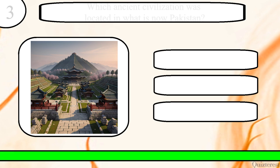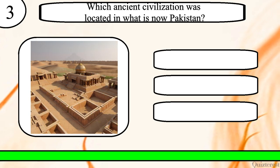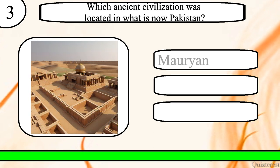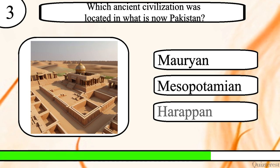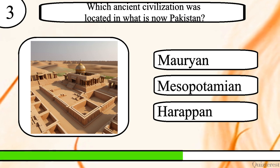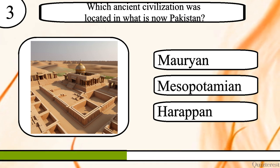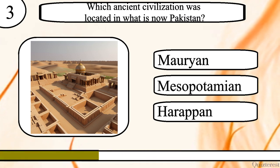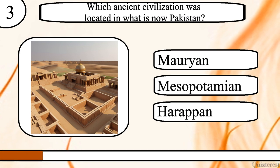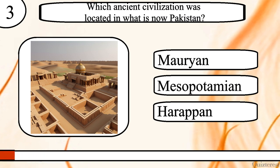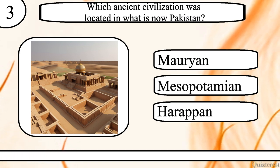Question 3. Which ancient civilization was located in what is now Pakistan? Mauryan, Mesopotamian or Harappan? The correct answer is Harappan.